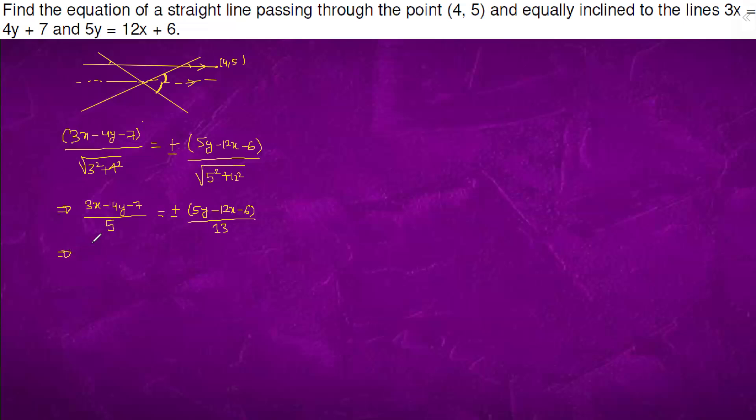We will do cross multiplication. We will get 39x minus 52y minus 91 equals to plus minus 25y minus 60x minus 30. We will take plus once. We will get 99x minus 77y minus 61 equals to 0.